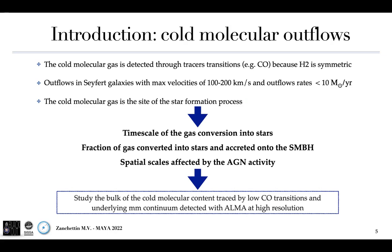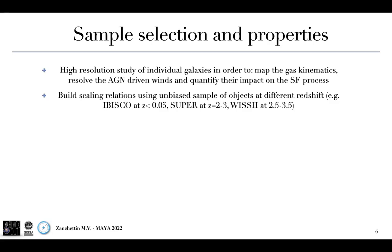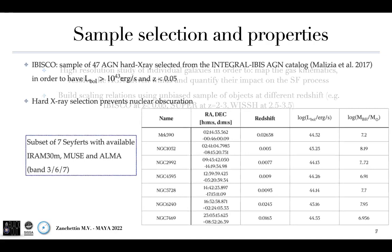Therefore, we want to study the bulk of the cold molecular gas content traced by low-J CO(1-0) transitions and the underlying millimeter continuum with ALMA at high resolution. We can perform two main modes: we can study individual galaxies at high resolution in order to map the gas kinematics, resolve the AGN-driven winds, quantify the impact on the star formation process, and build scaling relations using a broader sample of objects at different redshifts.